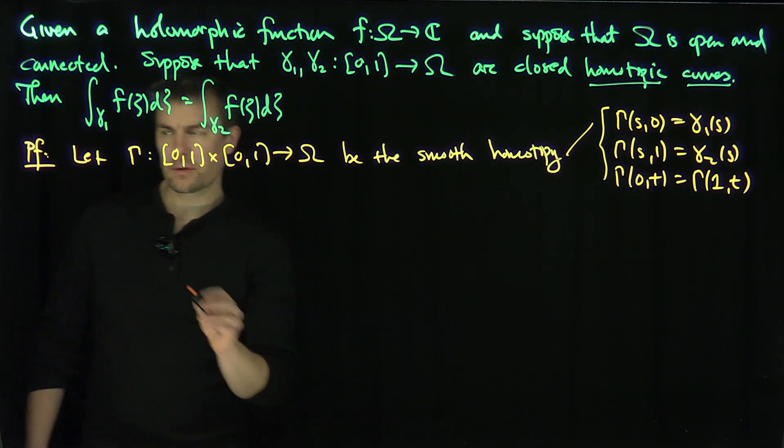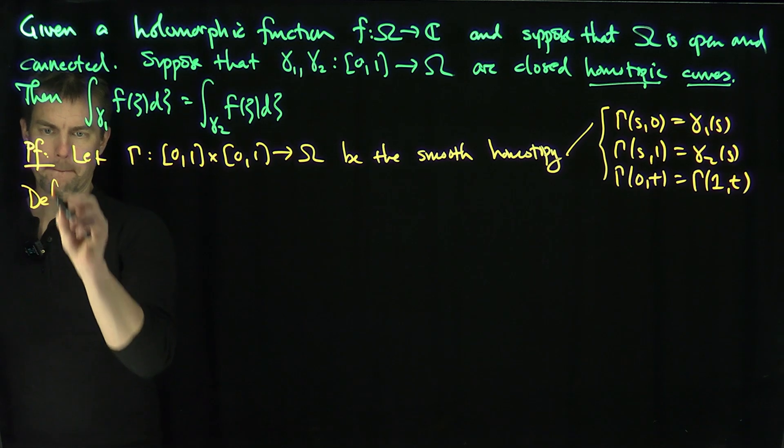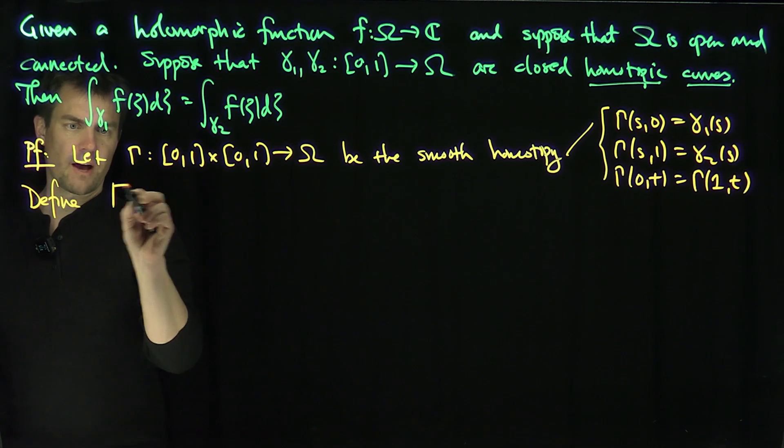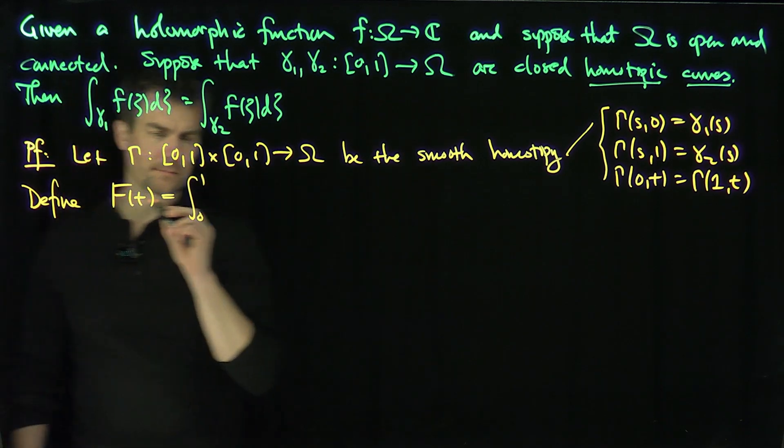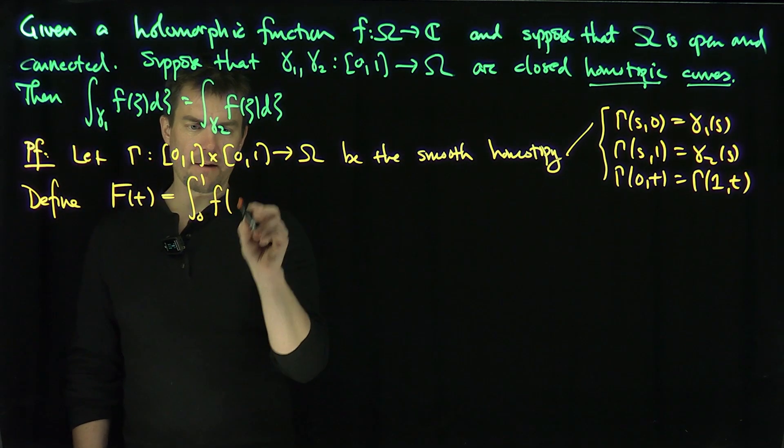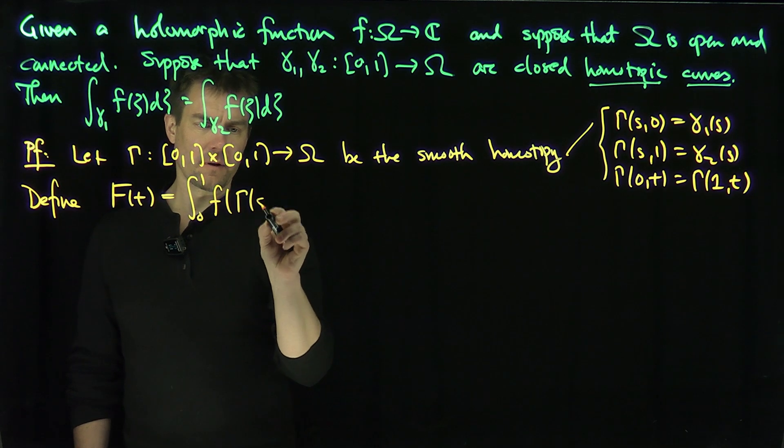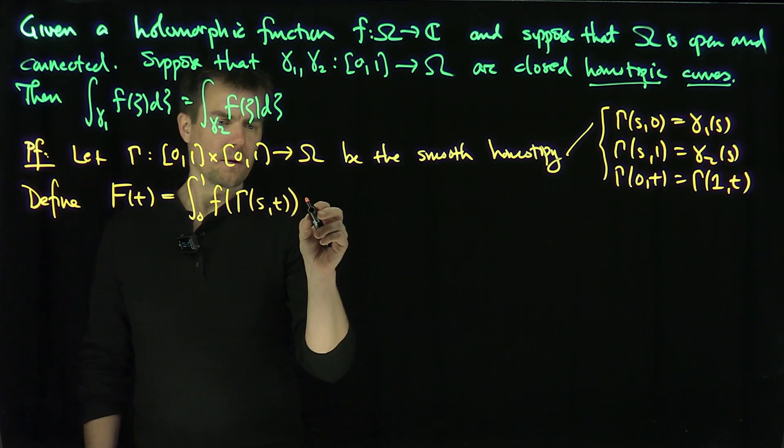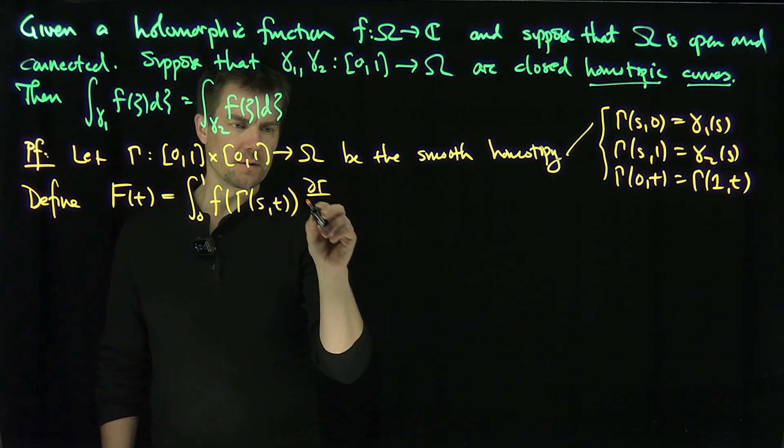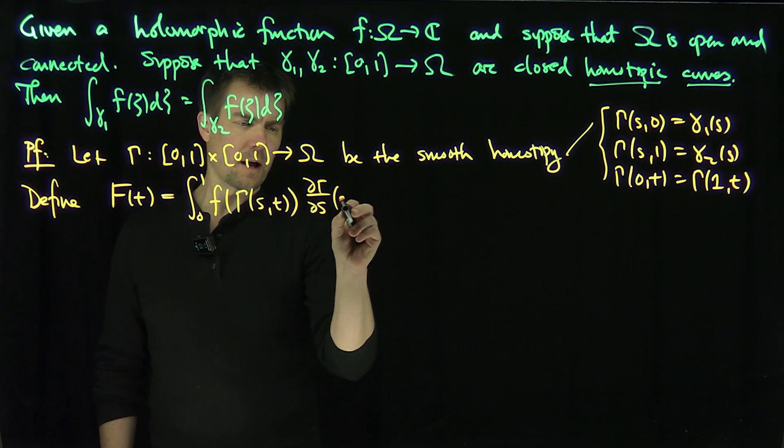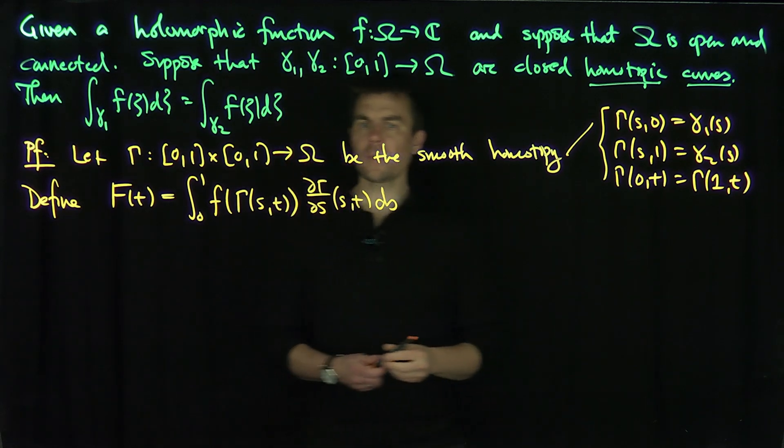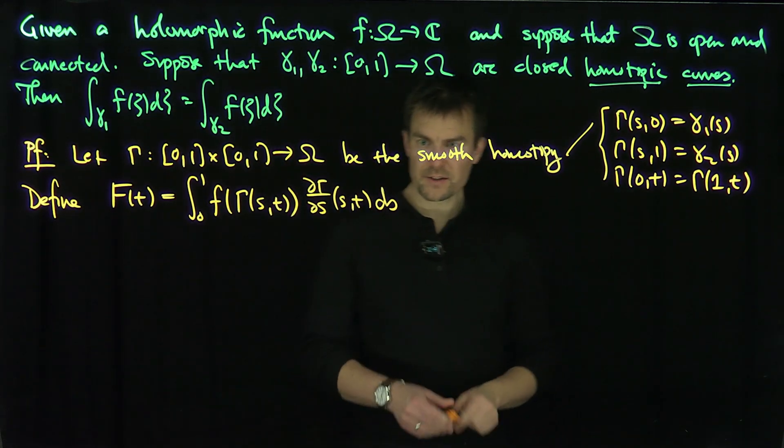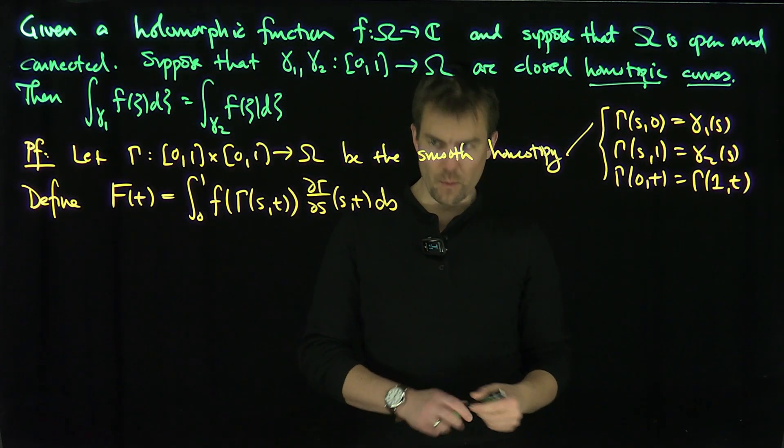And so now I'm going to define a function F of T, which is the integral from 0 to 1 of my function F of gamma of (S,T), and then d gamma dS (S,T) dS. And then what can I notice about this? From this definition, it immediately follows that what?